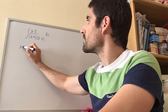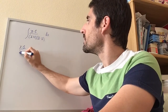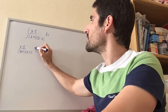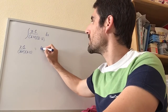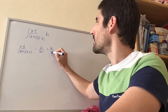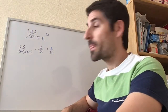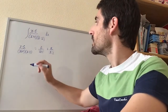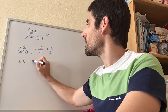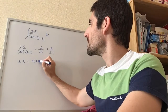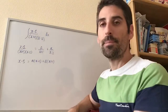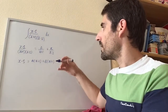(x minus 5) over (x plus 1)(x minus 2) is going to be the same as A over (x plus 1) plus B over (x minus 2). If we remember our partial fractions, this means that x minus 5 is going to equal A times (x minus 2) plus B times (x plus 1). Now we need to find A and B.